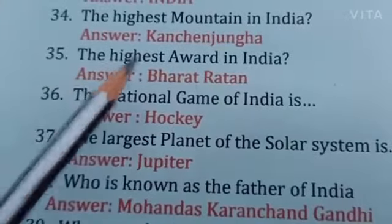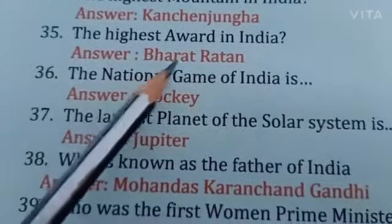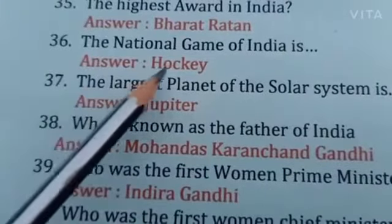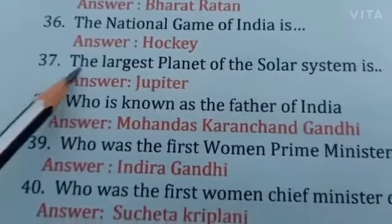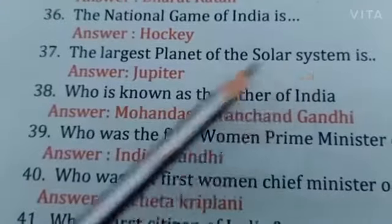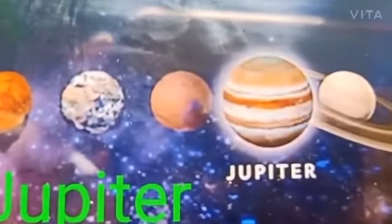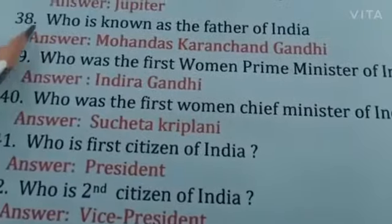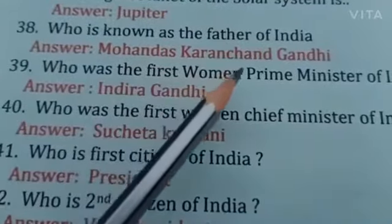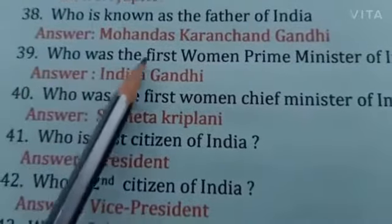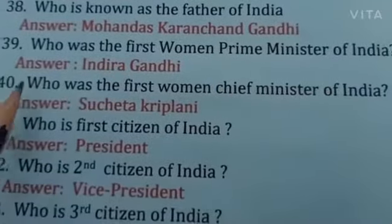The highest award in India? Answer: Bharat Ratna. The national game of India is? Answer: Hockey. Question number 37: The largest planet of the solar system is? Answer: Jupiter. Jupiter is the largest planet in the solar system. Question number 38: Who is known as the father of India? Answer: Mohandas Karamchand Gandhi. Who was the first woman Prime Minister of India? Answer: Indira Gandhi.